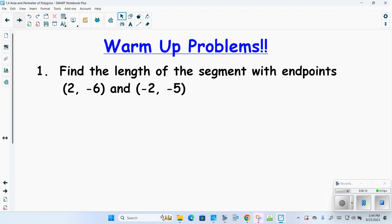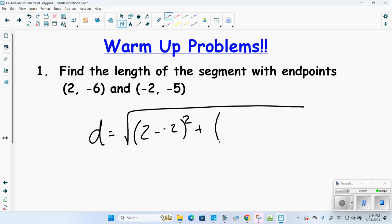Find the length of the segment with endpoints (2, -6) and (-2, -5). Distance formula is x minus the other x squared and then y minus the other y squared. You end up with 4 squared plus -1 squared, and so you end up getting the square root of 17. Using a calculator, the square root of 17 is approximately 4.1.